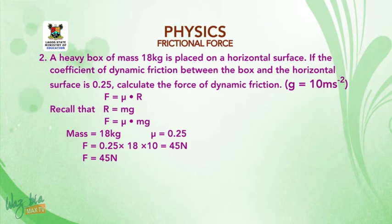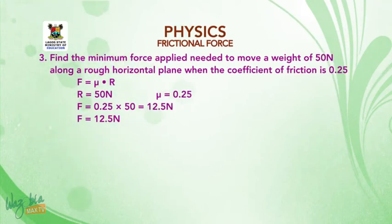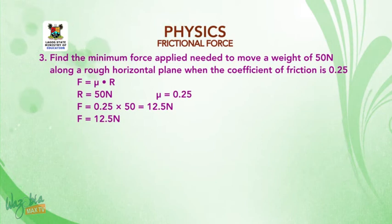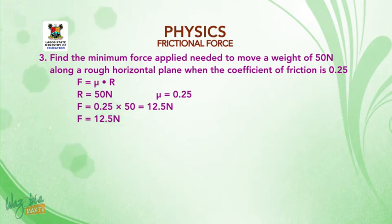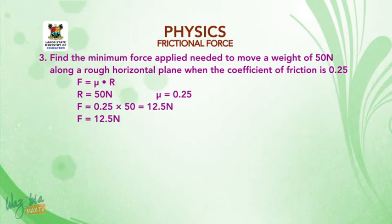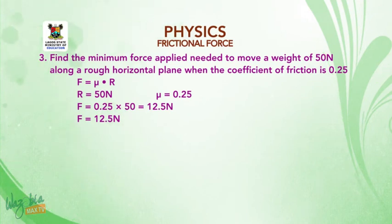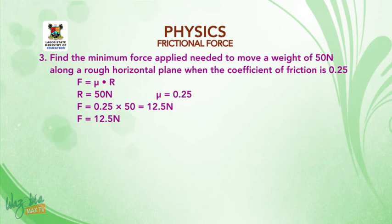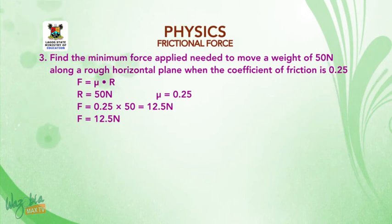Worked Example 3: Find the minimum force needed to move a weight of 50 N along a rough horizontal plane when the coefficient of friction is 0.25. Since F = μR and R = 50 N, F = 0.25 × 50 = 12.5 N. Therefore, the minimum applied force is 12.5 N.